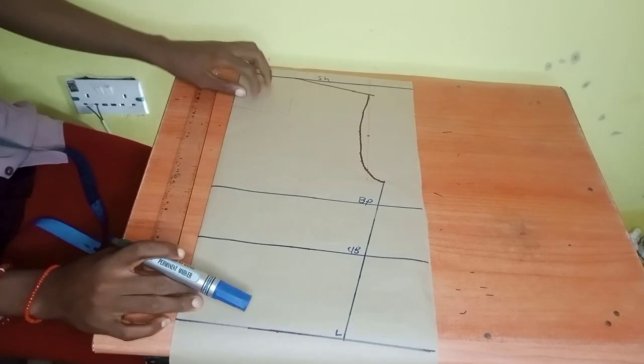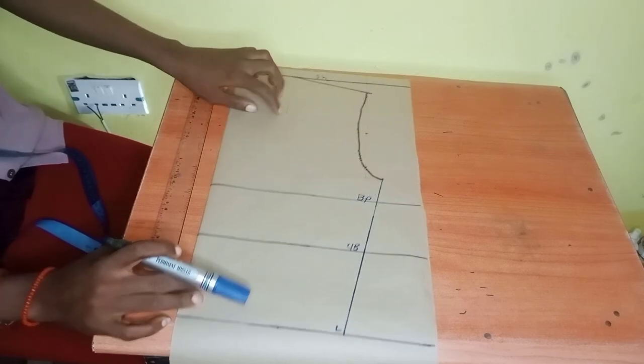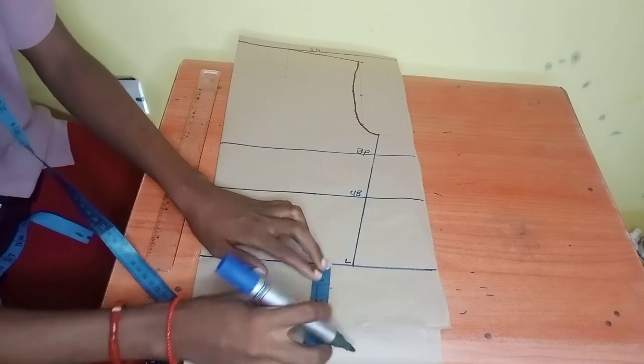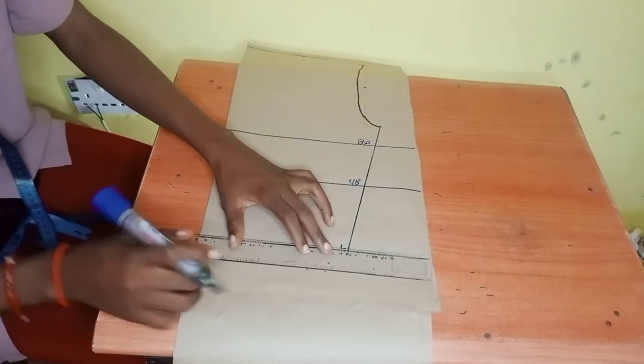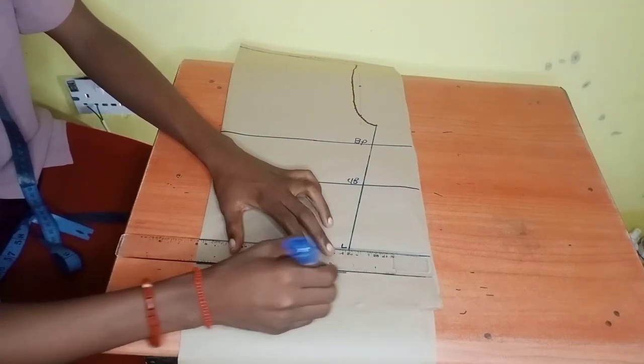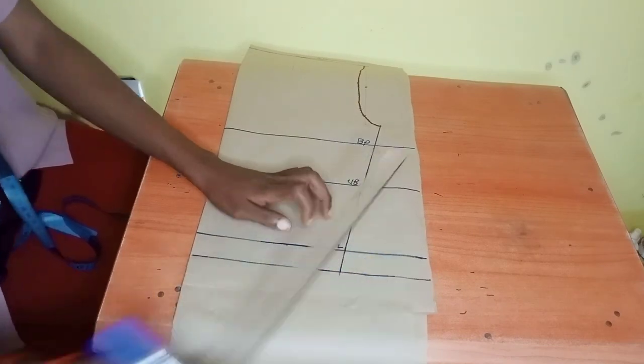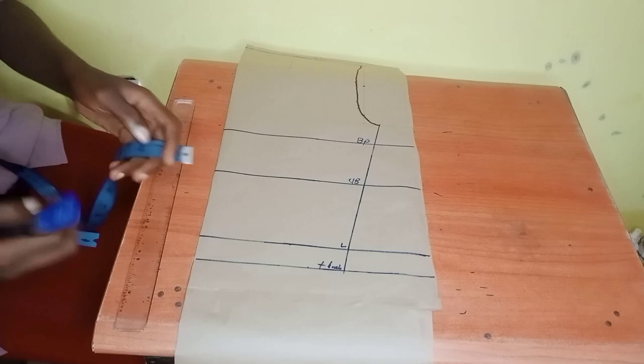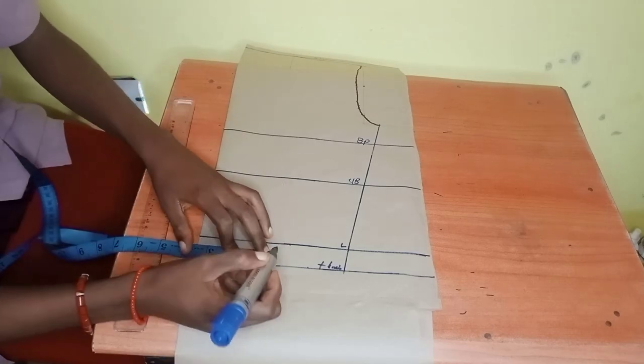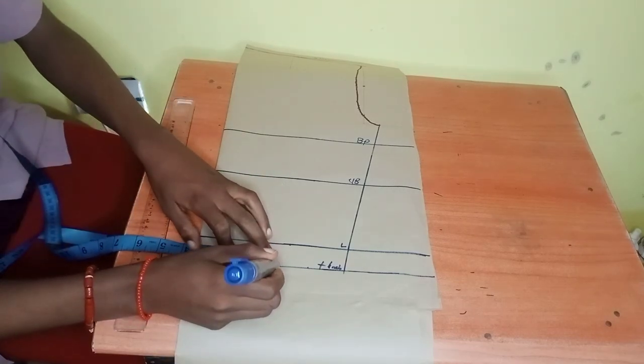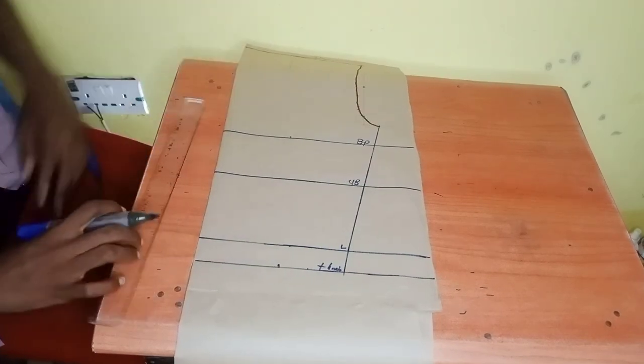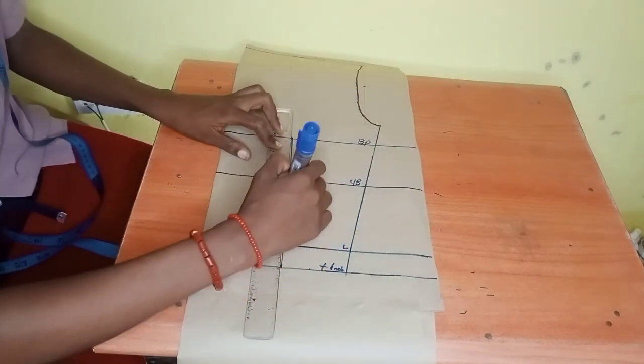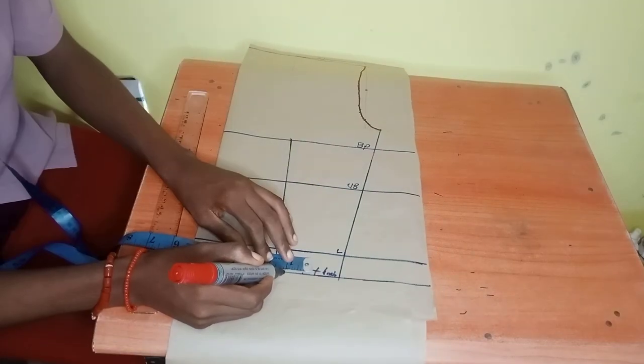The next thing we want to do now is we're going to be taking our one inch at the bottom. Mind you, I have not created any neckline, we'll be doing that much later. This one inch is not an allowance, we'll be using it in preparing our corset top.